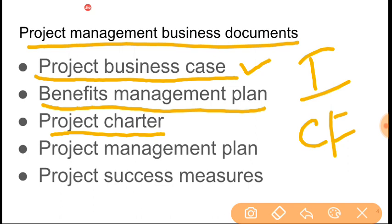Next is the project charter — a document of a few pages prepared by the sponsor of the project. It contains the business case, major milestones with dates, key stakeholders' names and contact details, the project manager's name, roles and responsibilities, high-level risks, and assumptions. It is an official document that gives authority to the project manager. The sponsor is the person or entity — individual, company, or consortium — who funds the project. We will discuss the project charter more when we get into initiation.